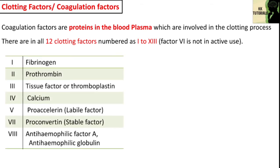Factor number 1 is fibrinogen, and its source is the liver. Factor number 2 is prothrombin, and its source is also the liver. Factor number 3 is thromboplastin or tissue factor; its sources are platelets and the endothelium of the blood vessels. This factor is involved in the initiation of the intrinsic pathway.